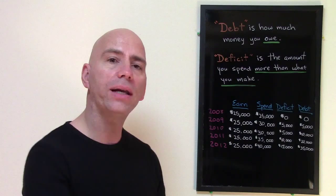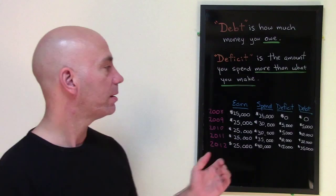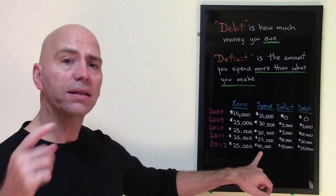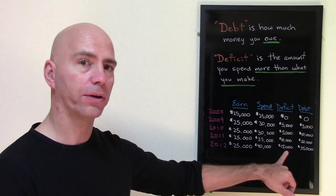So as you can see, your deficit is how much more money you spent than what you made. And the debt is the total amount of money that you owe. So in the year 2012, you made $25,000 again. This time, you took a big vacation.